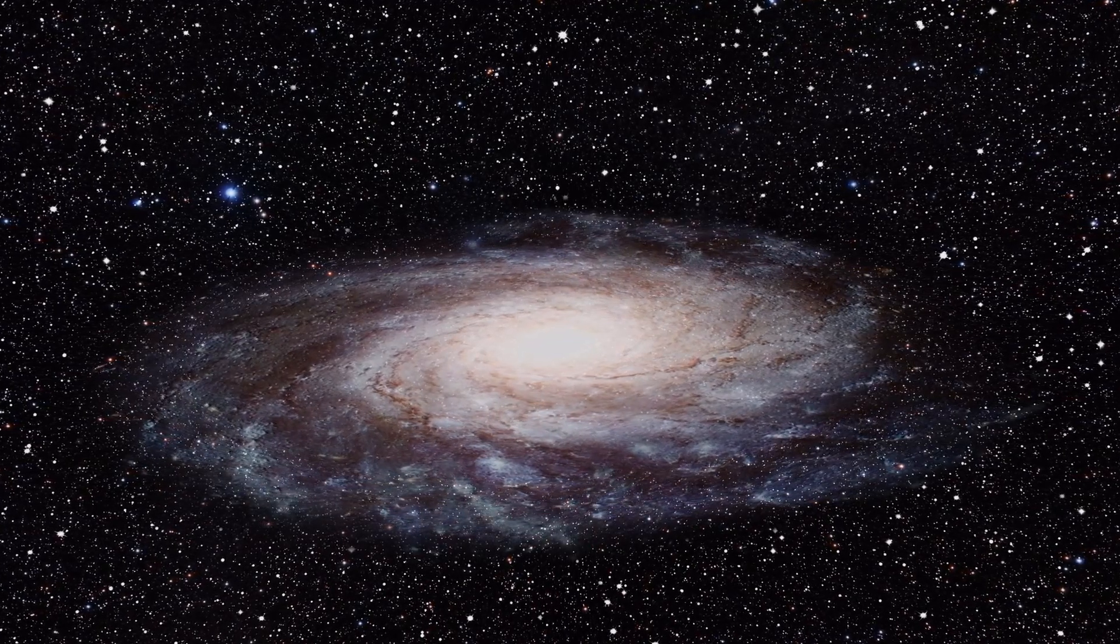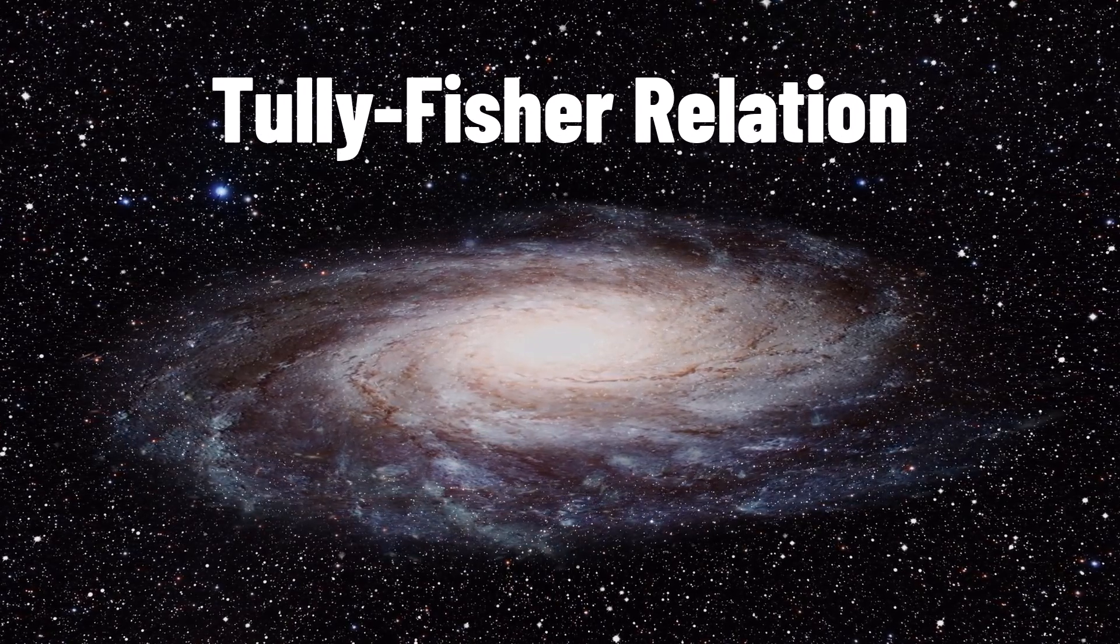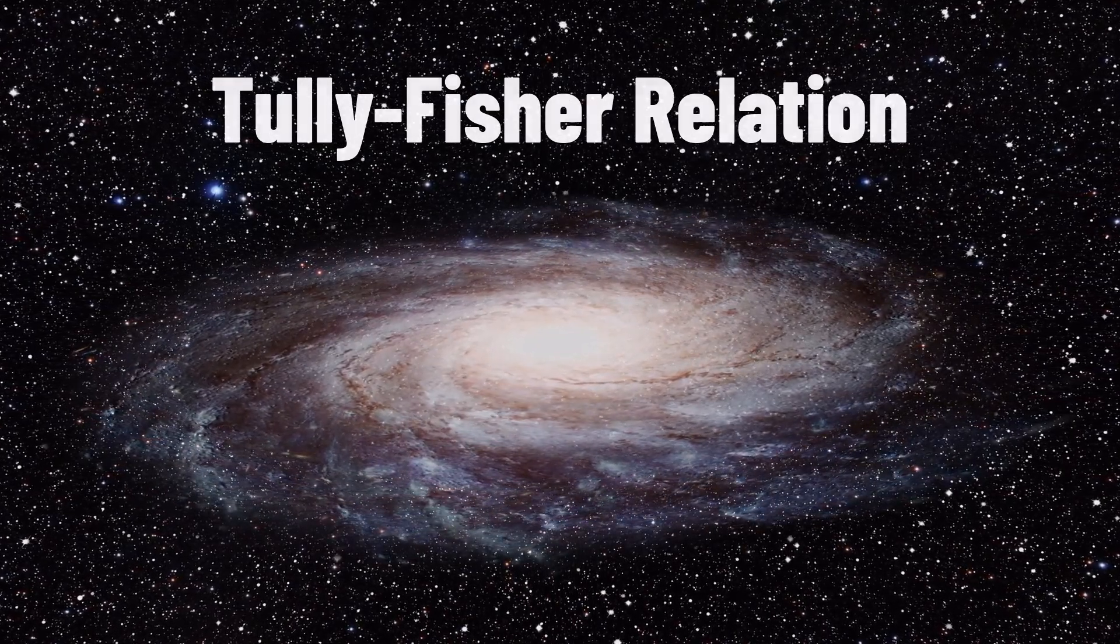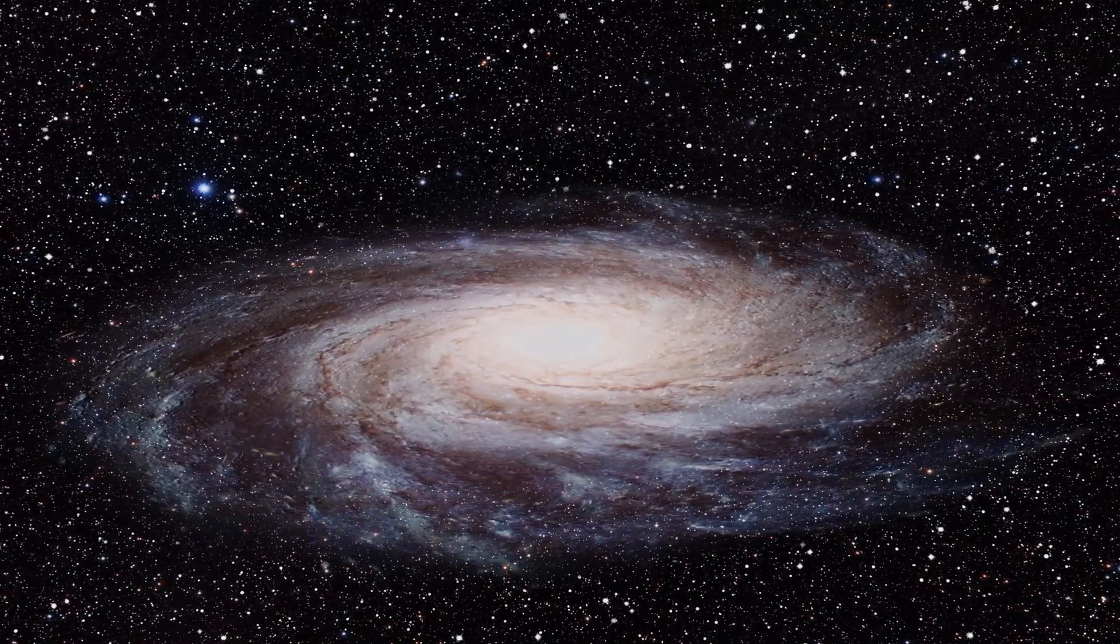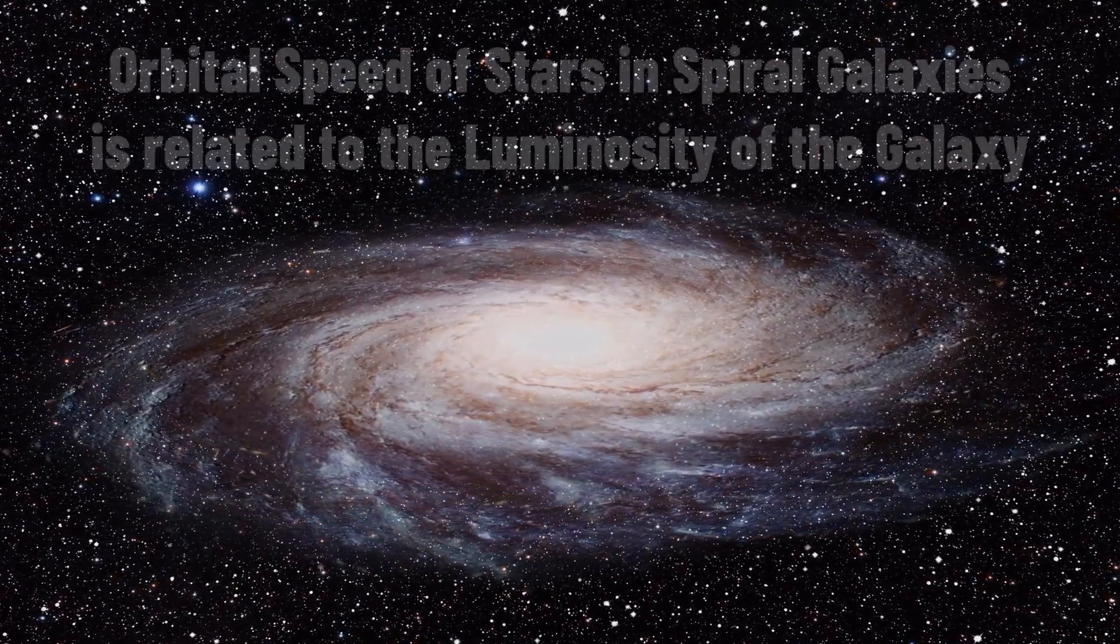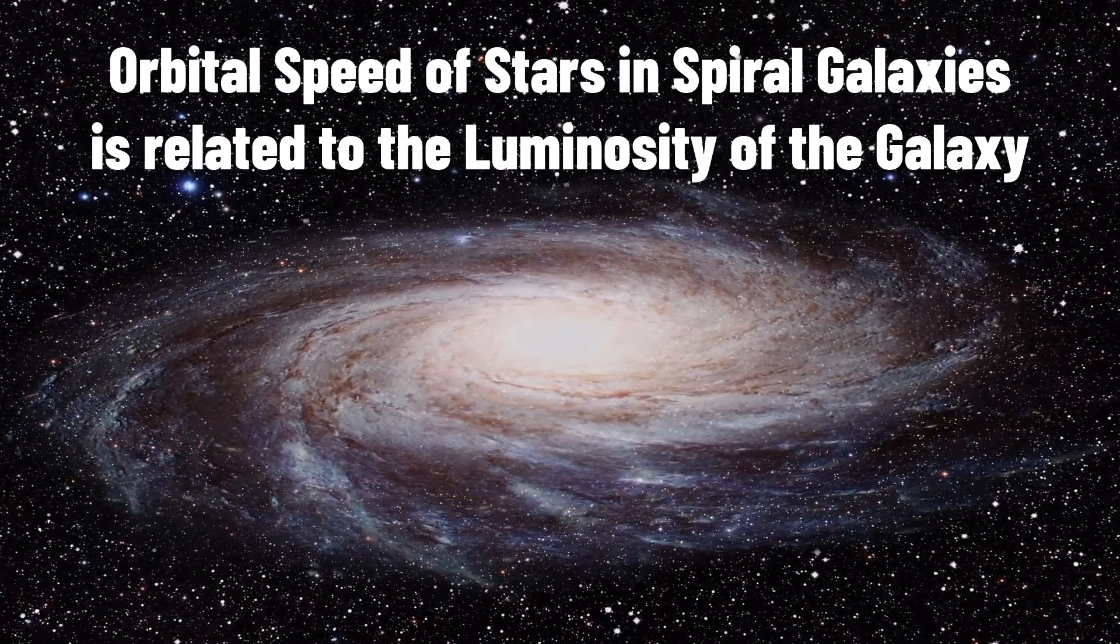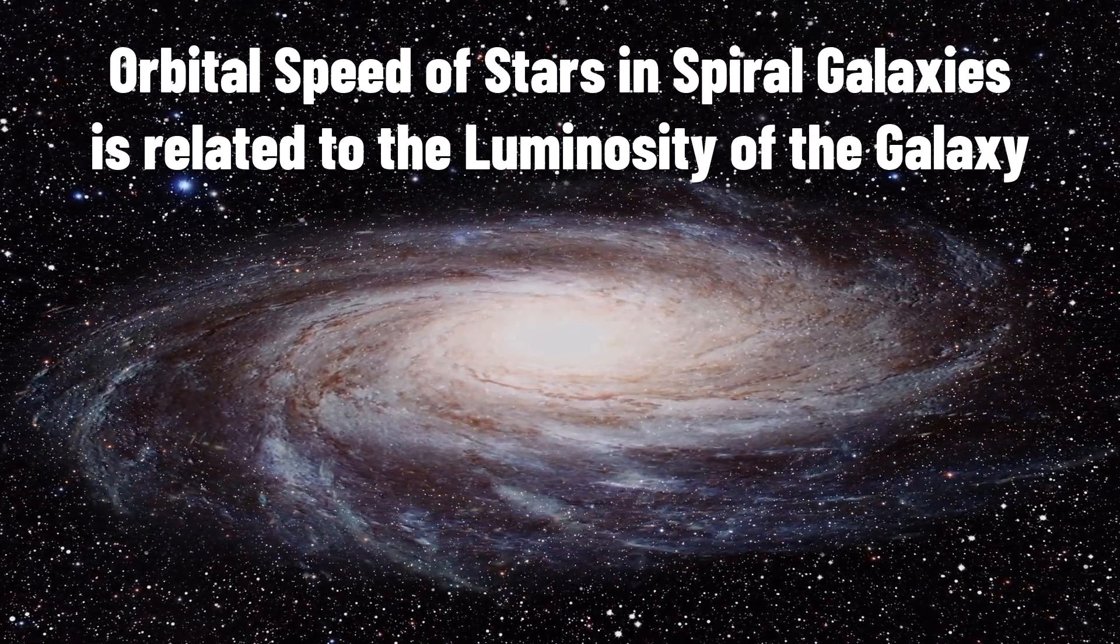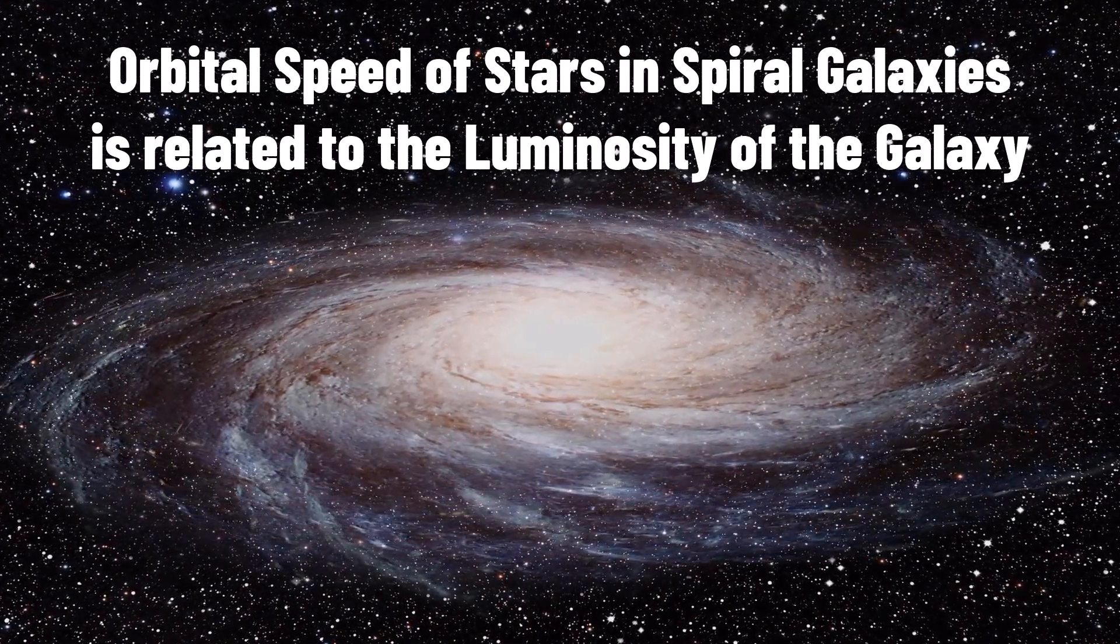Another standard candle is spiral galaxies and the Tully-Fisher relation. This is that the mass or rotation velocity of stars in spiral galaxies is related to the mass of the entire galaxy. This makes sense as mass affects the speed stars orbit due to gravity, and also the luminosity of the galaxy as more mass means more fuel for fusion in stars. So once scientists can deduce how fast stars are moving in galaxies, they can then find the luminosity of the galaxy and then its distance.